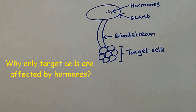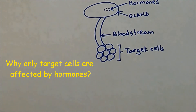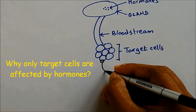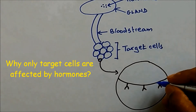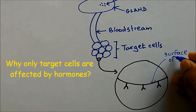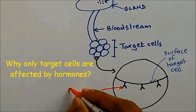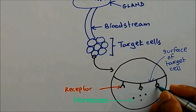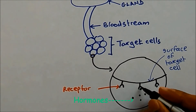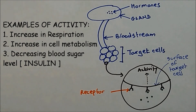Why can hormones only affect target cells? The reason is because target cells contain receptors on their surface. If I expand this portion of the cell — this is the surface of the target cell, and these are the receptors. The hormones come and bind to the receptors, and when they bind, activity is created in the cell. These activities could be, for example, an increase in respiration or an increase in metabolism of the cell.